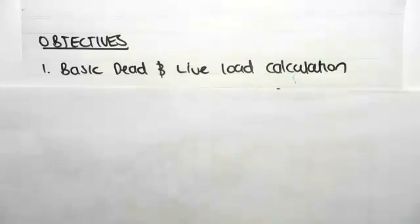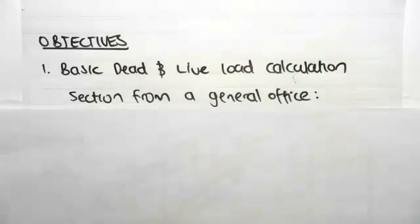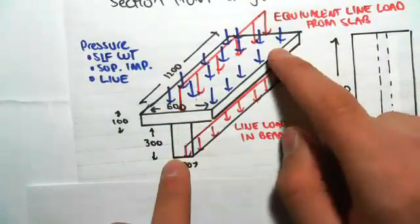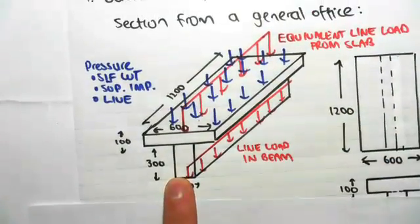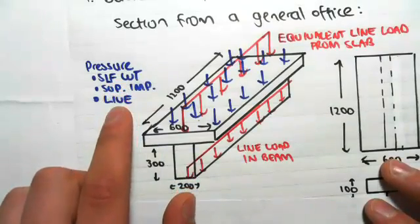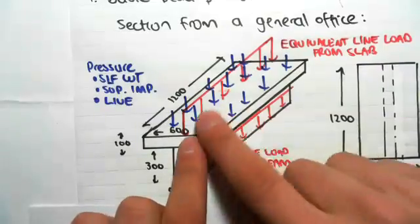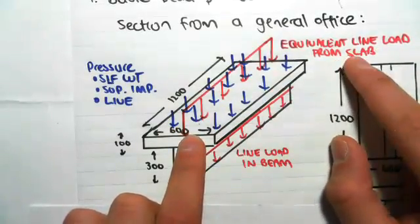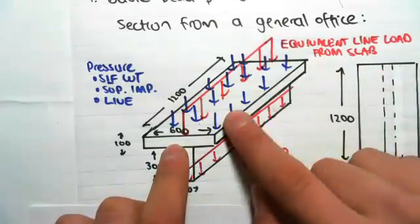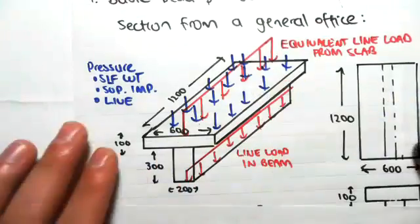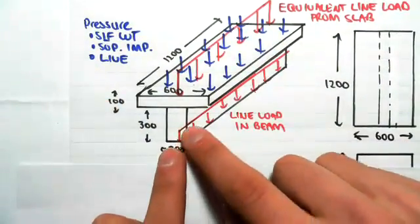The objective for this video is to do a very basic dead and live load calculation. We're going to be given a section from a general office. We have a slab and a beam, and in blue is the pressure due to self-weight, superimposed, and live loads. We're going to work out an equivalent line load from the slab, and also the line load from the beam.